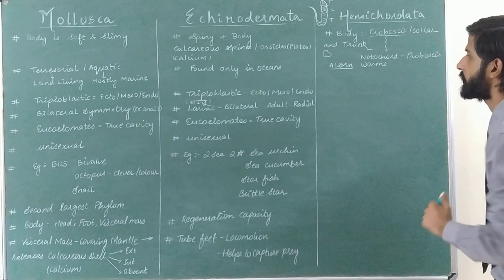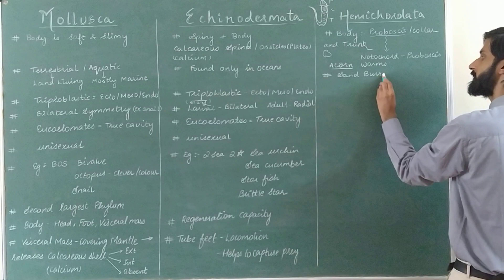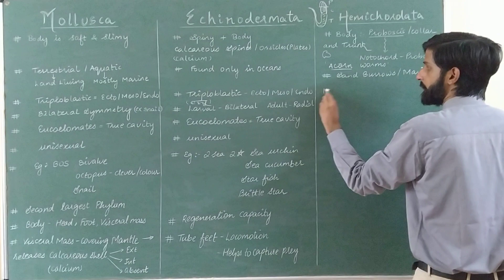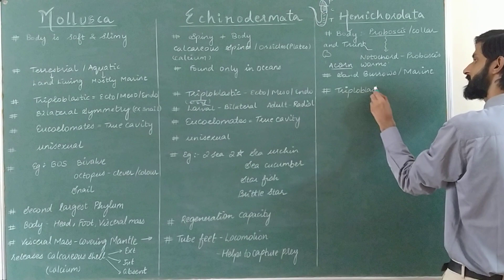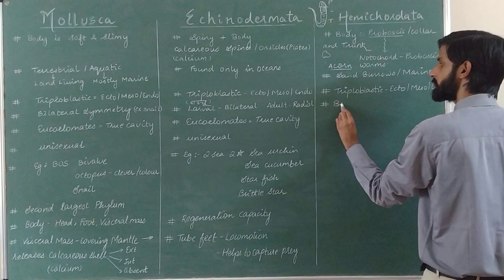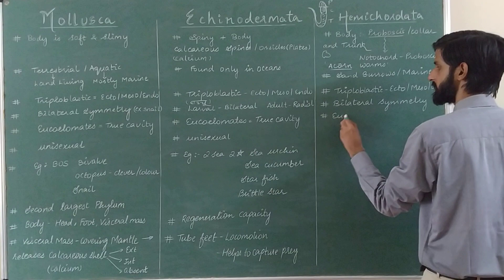These worms are found in sand burrows and they are marine. As with the other phyla, these are also triploblastic, showing three germ layers: ectoderm, mesoderm, and endoderm. Their symmetry is bilateral, and for body cavity, they are also eucoelomates, showing presence of a true body cavity.